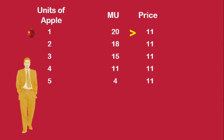Marginal utility is greater than price. Hence, he consumes the next apple. This happens so long as marginal utility is greater than price. Once they become equal, he stops his consumption. In our example, when the consumer consumes the fourth apple, marginal utility is equal to price.